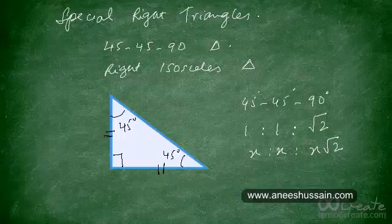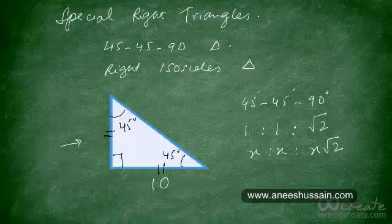Now you should try this question. If the base has a length of 10, what will be the length of the other side and the hypotenuse? The other leg — the perpendicular — will also have a length of 10, and the hypotenuse will have a length of 10 multiplied by √2.